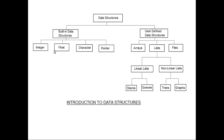Built-in data types: if you have numbers, then you can use integer and float. Integer is one type of data type, float is another type, both used for numbers. Character is used for alphabets, and pointer is a variable used to represent another variable. User-defined data types include array, list, file, and many more — we will see these in detail in the upcoming slides and videos.